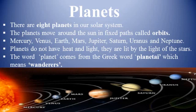Earth, Mars, Jupiter, Saturn, Uranus, and Neptune. Planets do not have their own heat and light; they are lit by the light of stars. The word 'planet' comes from the Greek word 'planetai,' which means 'wanderers.' This is a fitting description of the planets because they are constantly in motion.